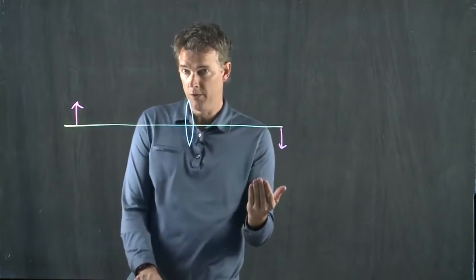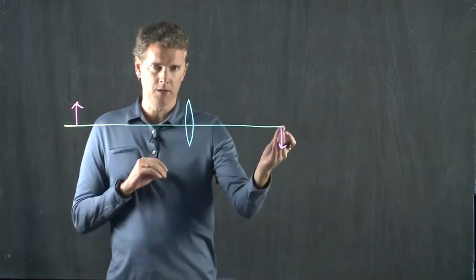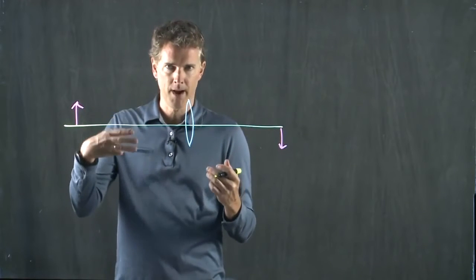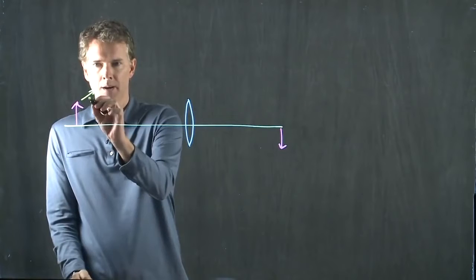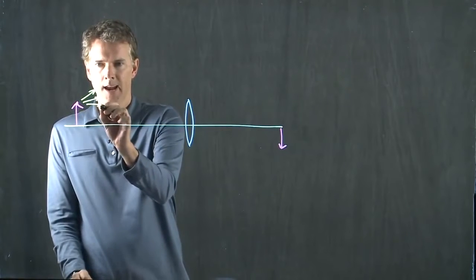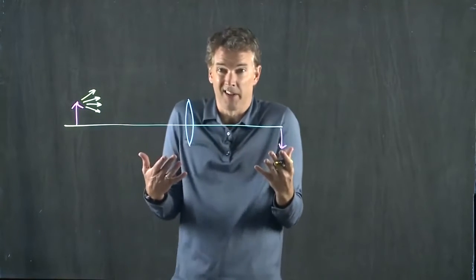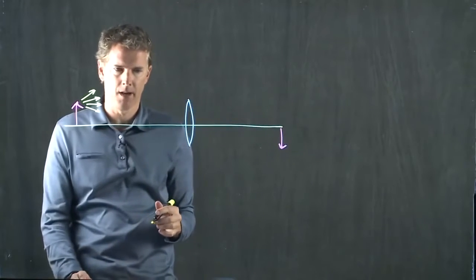Now, when you follow the lens rules for determining where the image is, we just drew three rays. But of course, there are rays coming off of this object in every single direction. There's essentially an infinite number of rays coming off the object.